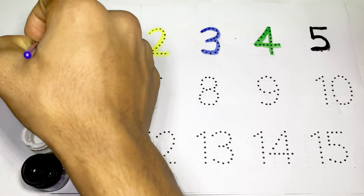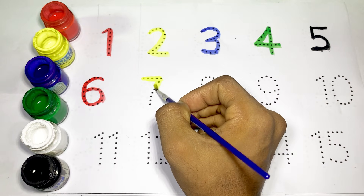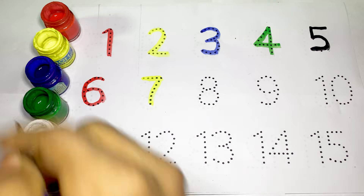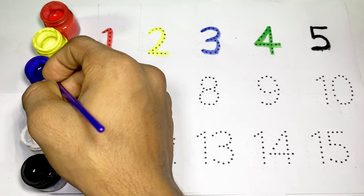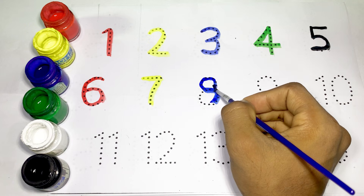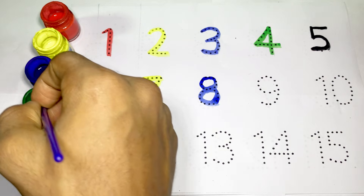Kids, number seven — the numbers of seven — and use yellow color. S-E-V-E-N, seven. Kids, number eight — the numbers of eight — and use blue color. E-I-G-H-T, eight.